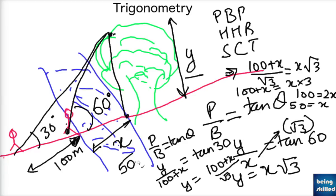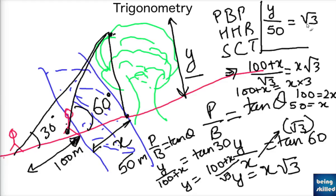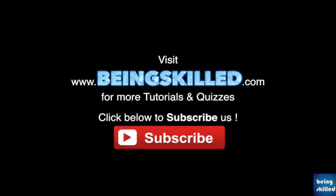So the width of the river is 50 meters. To find the height of the tree, we substitute x = 50 into y = x√3, giving y = 50√3 meters. So we calculated two things: first, the width of the river is 50 meters, and second, the height of the tree is 50√3 meters. Thank you for watching the tutorial — please don't forget to click the subscribe button for more updates from Being Skilled.